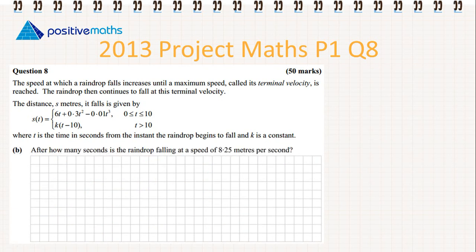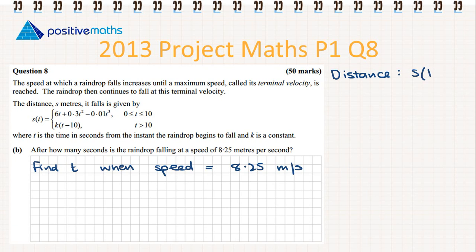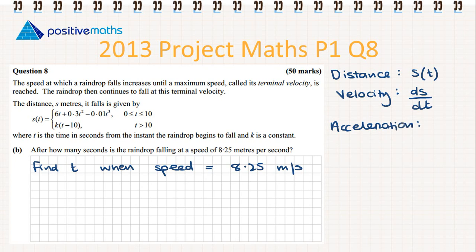Part b: After how many seconds is the raindrop falling at a speed of 8.25 meters per second? They are asking us to find t when the speed equals 8.25 m/s. We are given the distance s in terms of t. We need to be familiar with the fact that velocity or speed is ds/dt, and acceleration, which we'll need later, is the second derivative d²s/dt². So we need to find ds/dt.